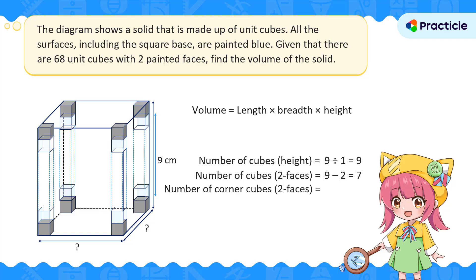We multiply 7 by 4 since the cuboid has four corners, giving us 28 cubes with two painted faces. We've found 28 cubes, but we still need to find the rest. 68 minus 28 is 40, so we still need to find 40 more cubes.